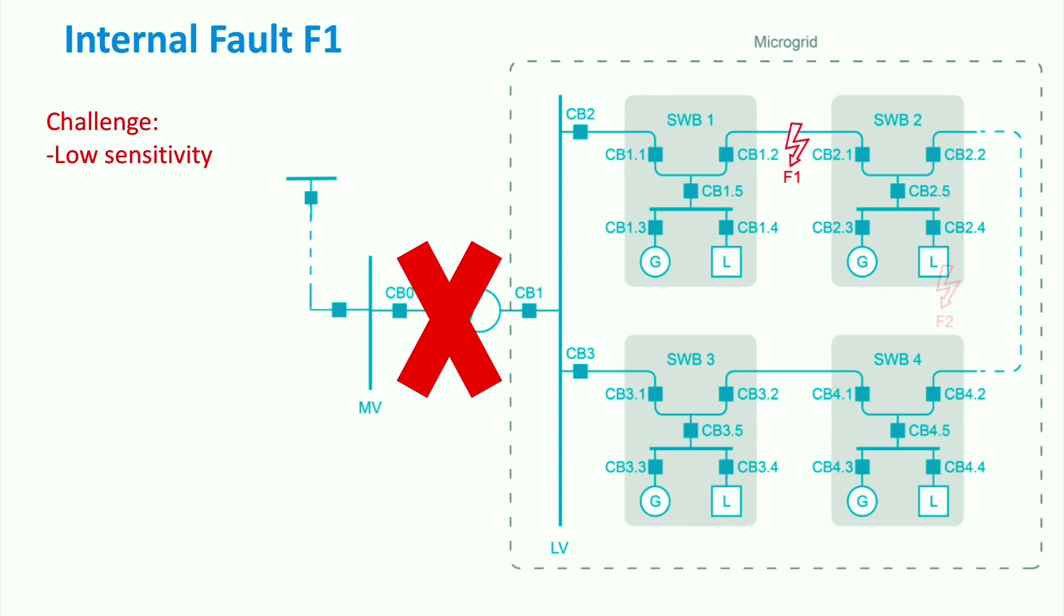There are two possible solutions to overcome the lack of sensitivity. As the microgrid has very low short-circuit currents, the first solution is to connect a new source, such as a diesel generator or flywheel, which can provide high fault currents. However, this might increase both investment and operation costs of the microgrid.